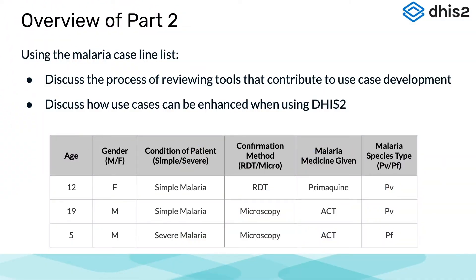In the second part of our overview, we are going to use the malaria use case to discuss how we can review various processes and tools to help us develop our use case requirements. We are also going to quickly discuss how this process can lead to further enhancements not previously considered or possible.